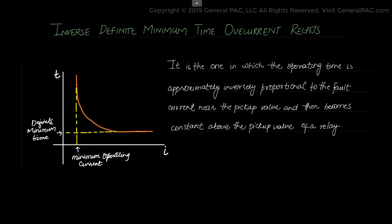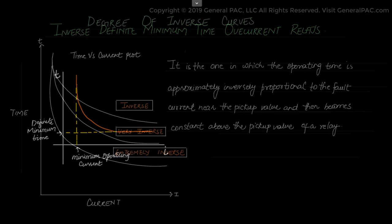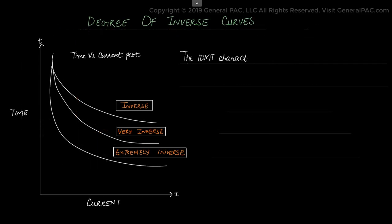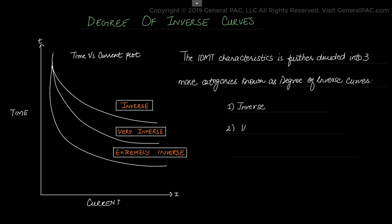These relays are used for the protection against overcurrent faults. The inverse definite minimum or the IDMT characteristic is further divided into three more categories that are known as the degree of inverse curves and they are the normal inverse, the very inverse and the extreme inverse.